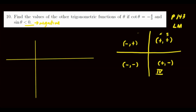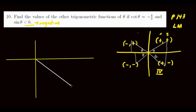Since we already know that theta is in quadrant four, let's draw the triangle in quadrant four. For reference: quadrant one has the triangle drawn to the upper right, quadrant two to the upper left, quadrant three to the lower left, and quadrant four to the lower right. So here is our theta in quadrant four. Since cotangent theta is negative four over three, and cotangent theta is x over y, x is four and y is three.